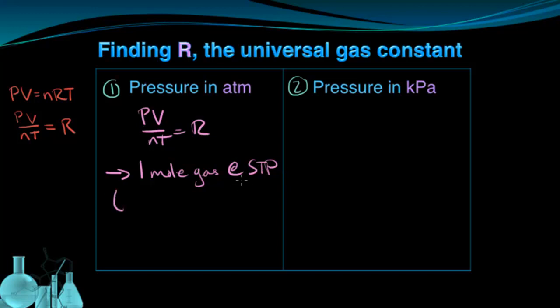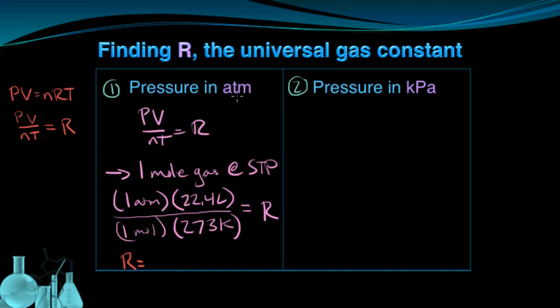The pressure at STP measured in atmospheres is one atmosphere. The volume of one mole of any gas at STP is the molar volume, which is 22.4 liters. N is the number of moles, and I'm considering one mole. The temperature at STP in Kelvin is 273 Kelvin. So I can run through the calculations, and R is equal to 0.0821 atmosphere liters over moles Kelvin.